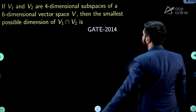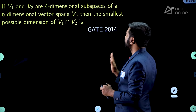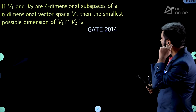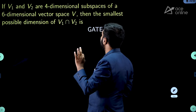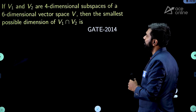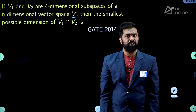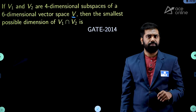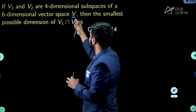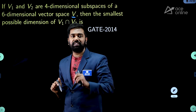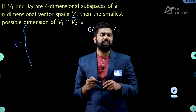Let us go to the next problem: if V₁ and V₂ are 4-dimensional subspaces of a 6-dimensional vector space V, then the smallest possible dimension of V₁ ∩ V₂ is? There is a vector space V whose dimension is 6, meaning there are 6 vectors in its basis — for example, the columns of a 6×6 identity matrix spanning R⁶.